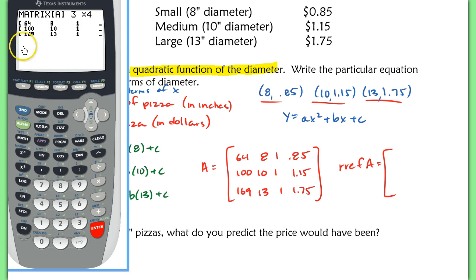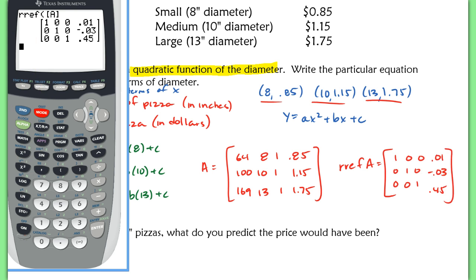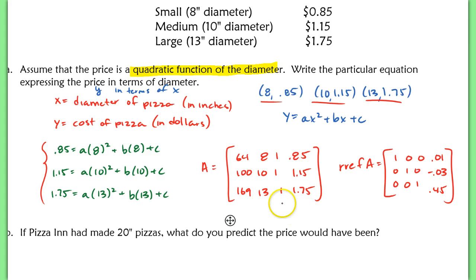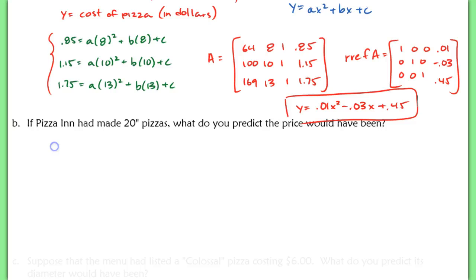Now we're going to row reduce echelon form this and show our matrix. You can see I already inputted this into my calculator so that when I do RREF of A, I end up with here, A, B, and C. So basically, in part A, my answer to this, because it asks for the particular equation, we're going to write y equals 0.01x squared minus 0.03x plus 0.45. This is the quadratic equation that models this situation.